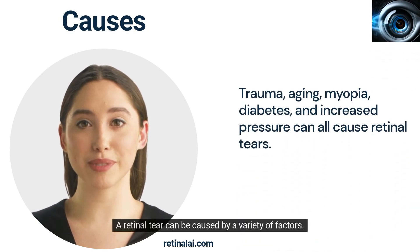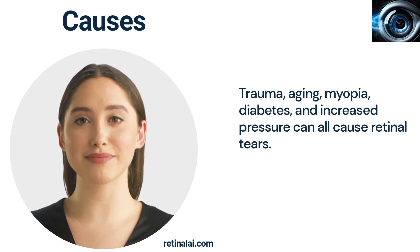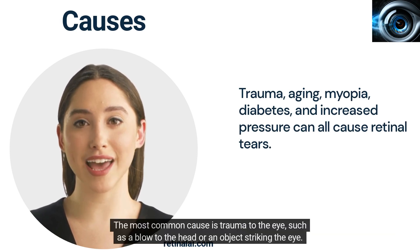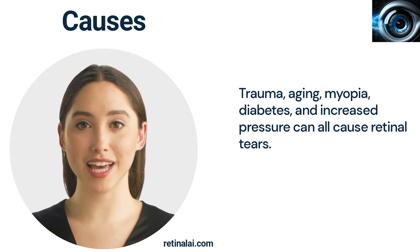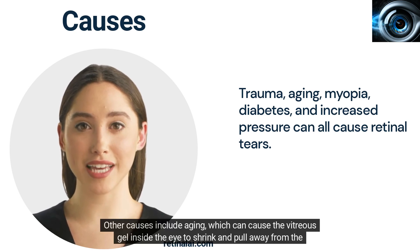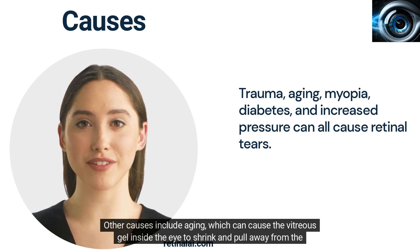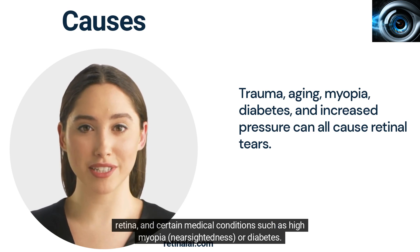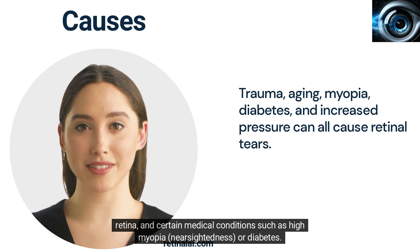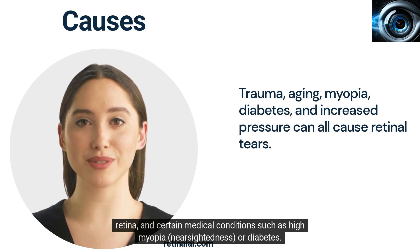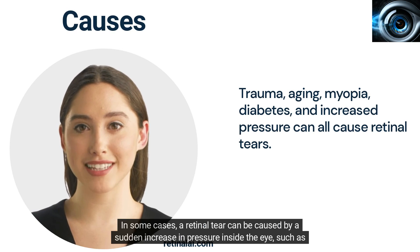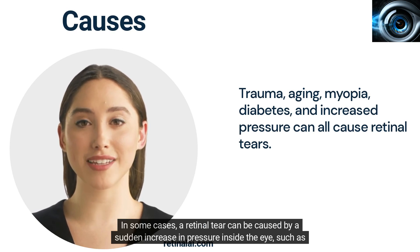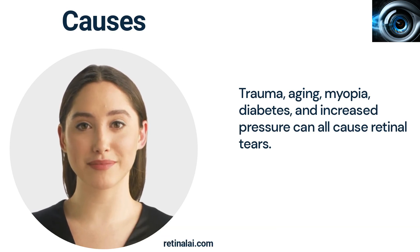A retinal tear can be caused by a variety of factors. The most common cause is trauma to the eye, such as a blow to the head or an object striking the eye. Other causes include aging, which can cause the vitreous gel inside the eye to shrink and pull away from the retina, and certain medical conditions such as high myopia, nearsightedness, or diabetes. In some cases, a retinal tear can be caused by a sudden increase in pressure inside the eye, such as during a sneeze or cough.